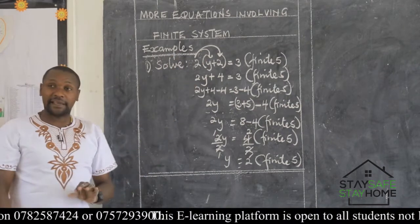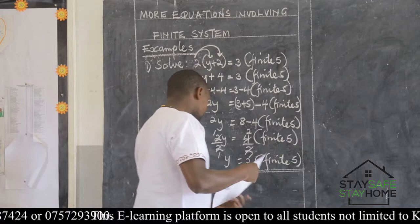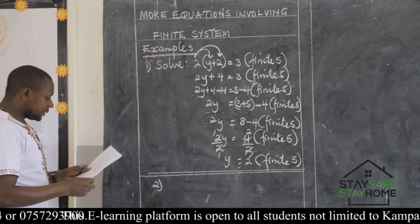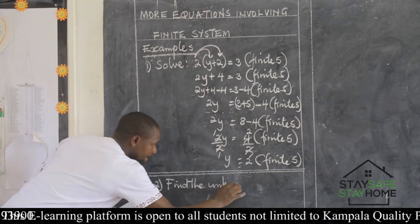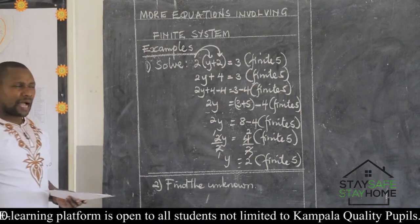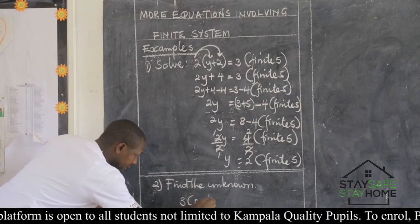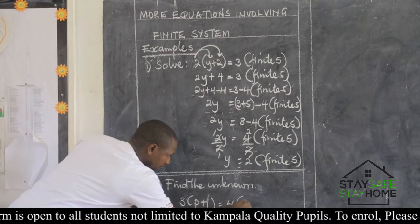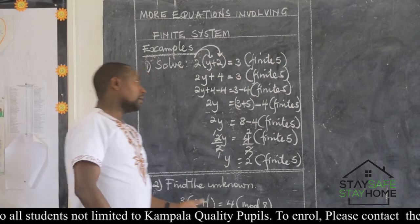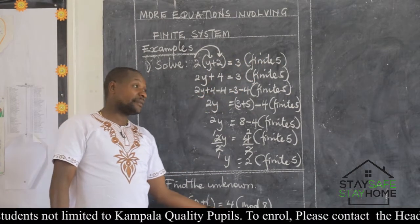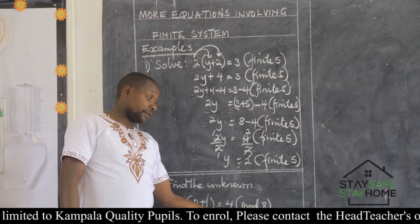If we happen to have the second example, hope you are ready to go with me. Assume we have been told to find the unknown. In this case, assume we have 3 into P plus 1, and this is giving me 4. And I'm applying the word mod. Remember, the word finite can be used — we can use the word mod. This is in short for modular. But you have to be careful of the abbreviation, which is M-O-D.